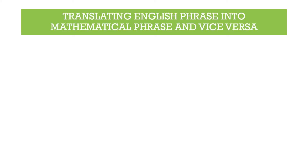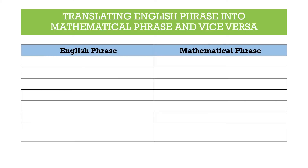Let's start with translating English phrases into mathematical phrases and vice versa. We have two columns: the English phrase and the mathematical phrase. For example 1, we have "the sum of three and four." We identify the clue word — "sum" is under the operation addition — so we write that as 3 + 4.